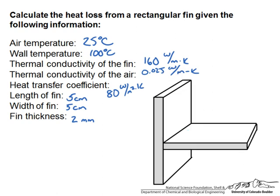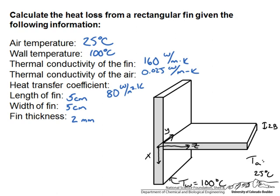First, we start with a fully labeled diagram. We choose an origin at the center of our fin, so the x-direction is down the face of the wall, the y-direction is along the other face parallel to the end of the fin, and the z-direction is down the fin. Our wall temperature T_w is at z equals 0, for all x and y. The thickness is labeled 2b — since we chose the origin at the center of the fin, b is the half-thickness in both directions. We also label the width w and length l.